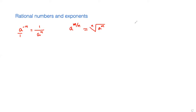And if we have a to the power m multiplied by a to the power n, that is the multiplication rule of exponents. We can write it as a to the power m plus n. So when we multiply terms with the same base, we have to add the exponents.